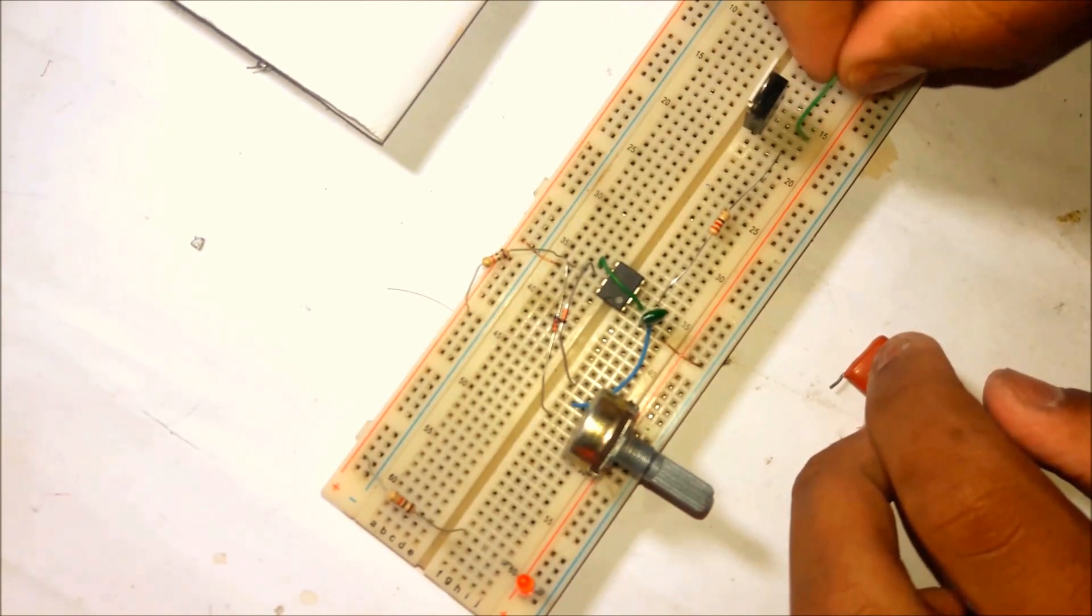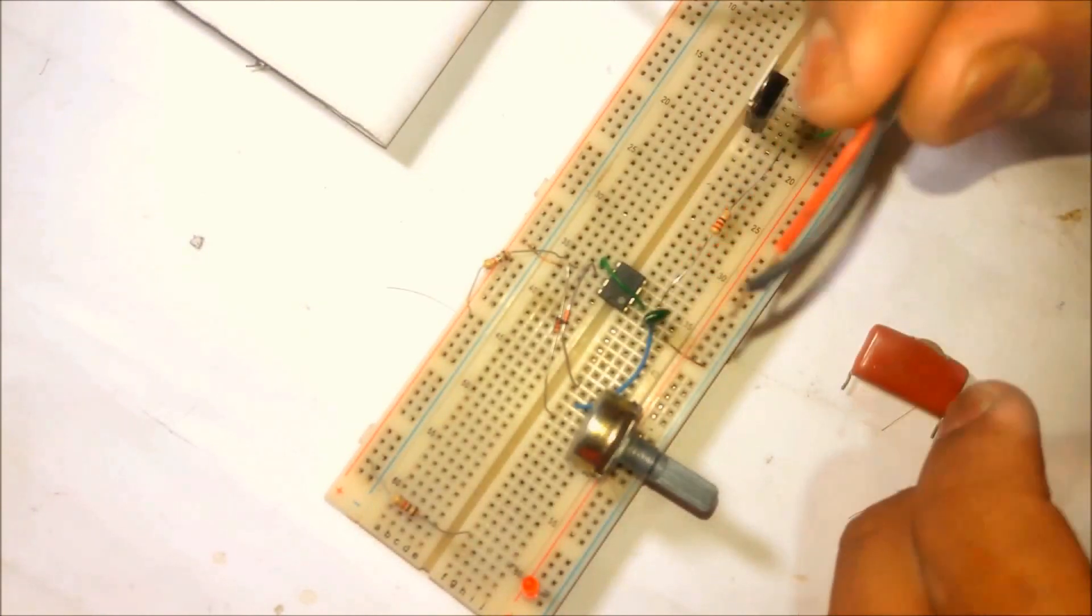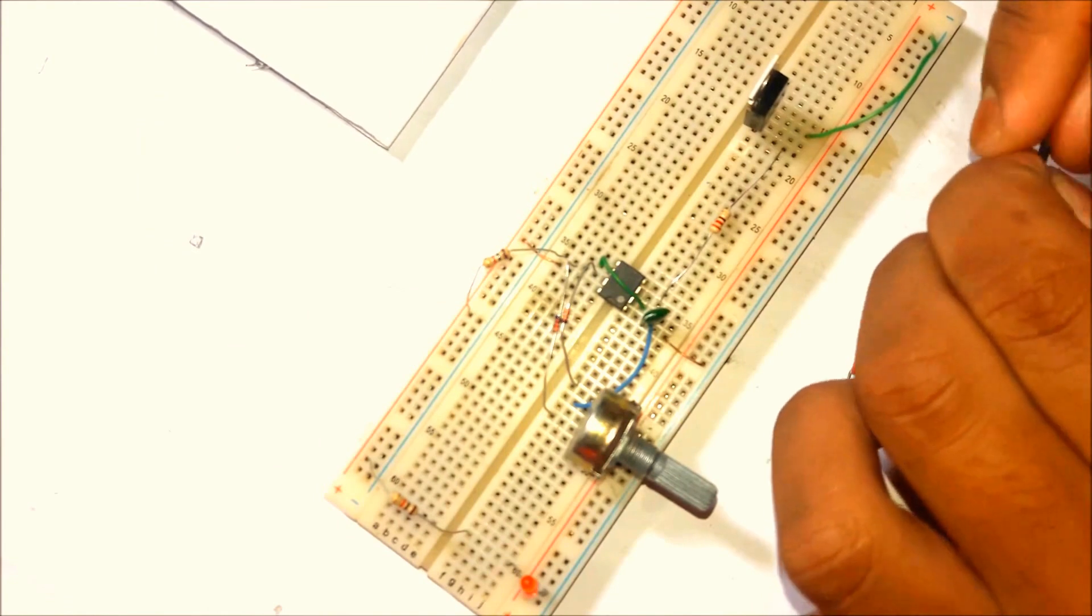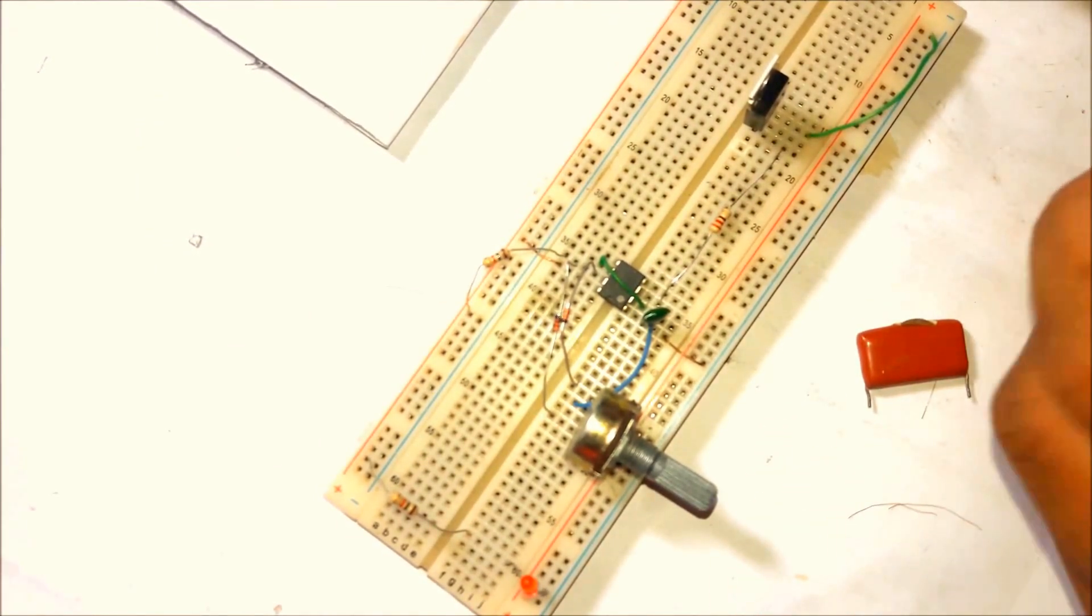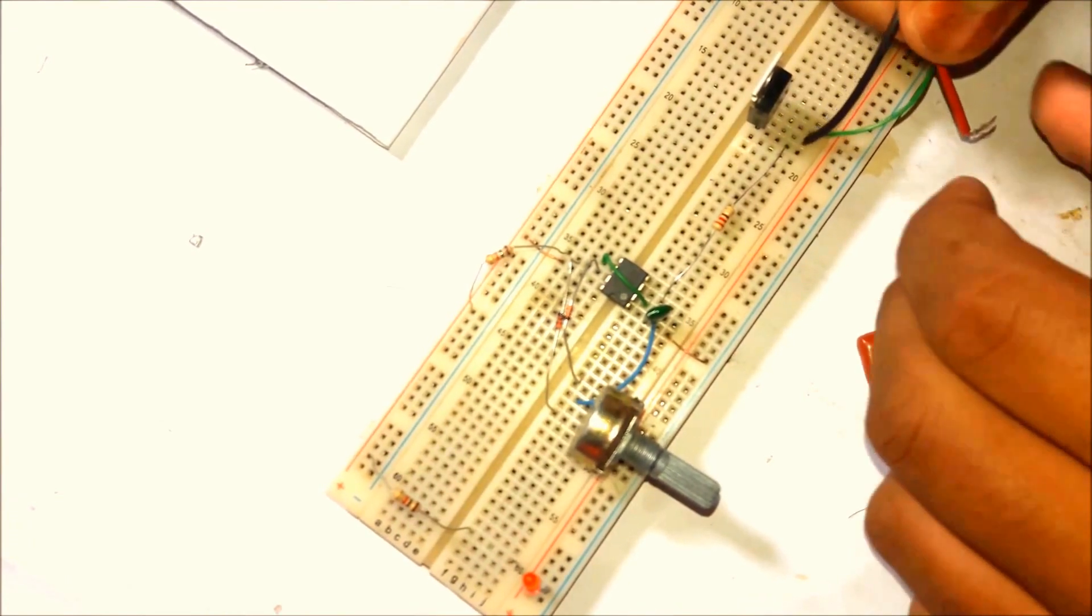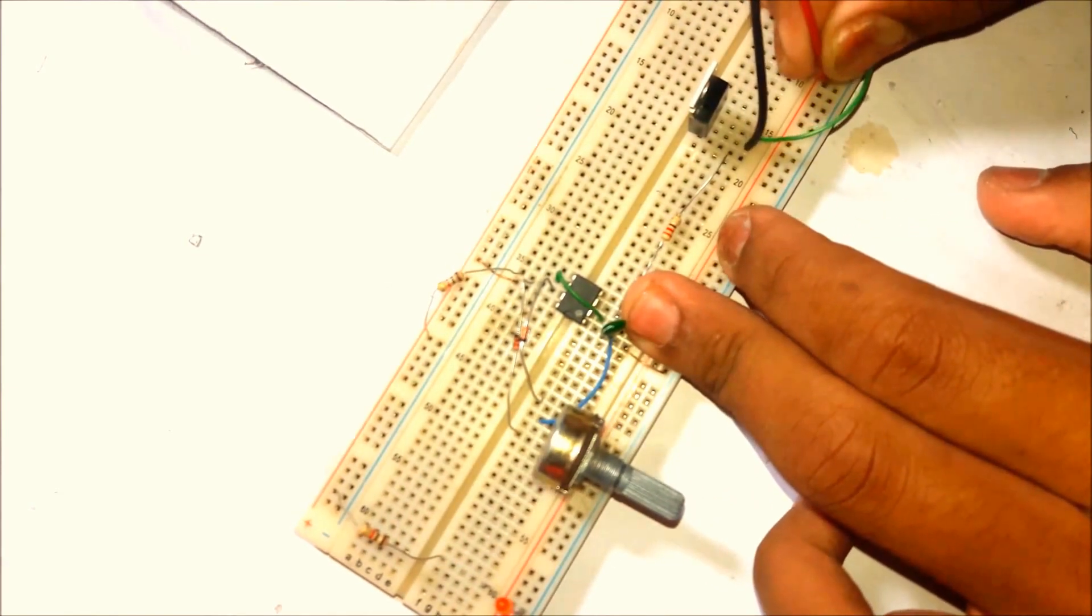Now connect the emitter pin of the transistor to the ground. Here are the power wires of a mini LED strip. Connect the ground wire of the strip to the collector pin of the transistor and the positive wire to the positive rail.